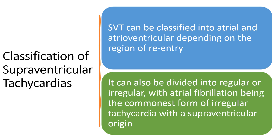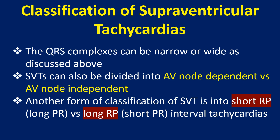SVT can be classified into atrial tachycardia and atrioventricular depending on the region of reentry. It can also be divided into regular or irregular, with atrial fibrillation being the commonest form of irregular tachycardia with a supraventricular origin. The QRS complexes can be narrow or wide as discussed above.